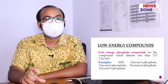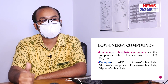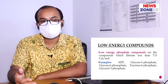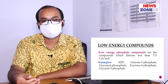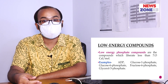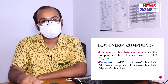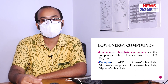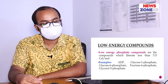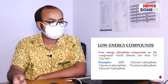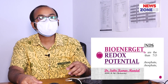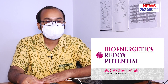Low energy phosphate compounds are the opposite of high energy phosphate compounds — chemical compounds which produce less than seven kilocalories per mole. Examples include adenosine diphosphate (ADP), glucose 1-phosphate, glucose 6-phosphate, fructose 6-phosphate, fructose 1,6-bisphosphate, and glycerol 3-phosphate.